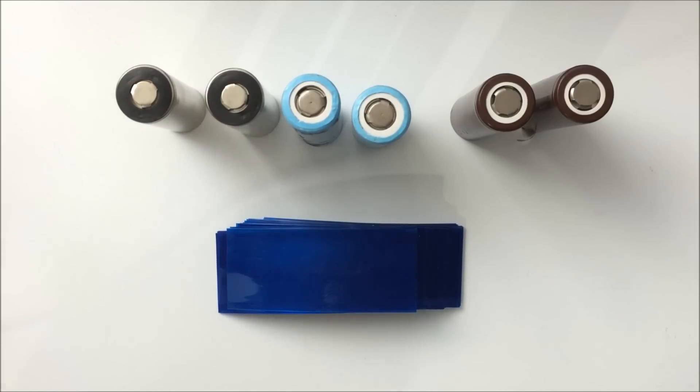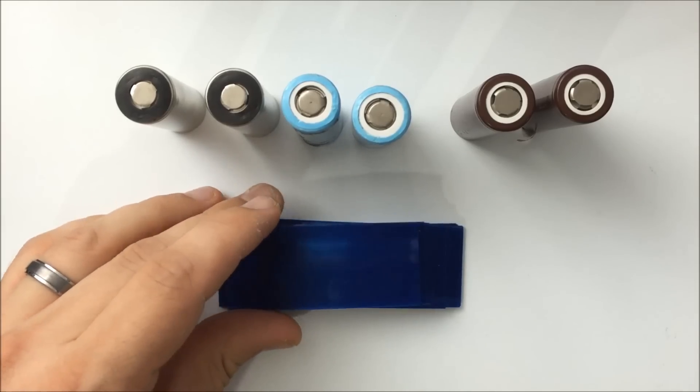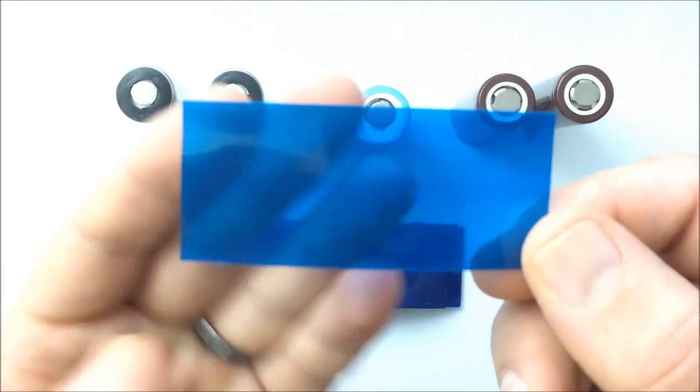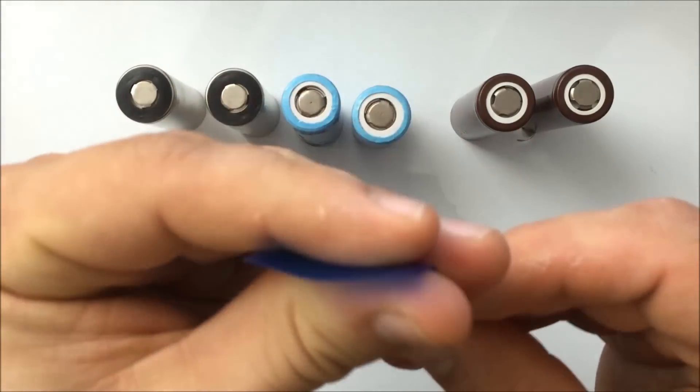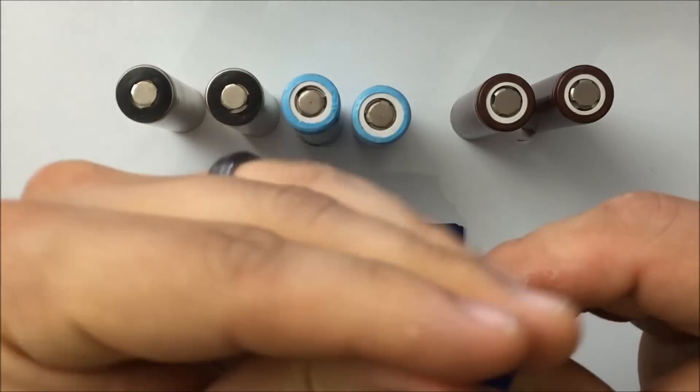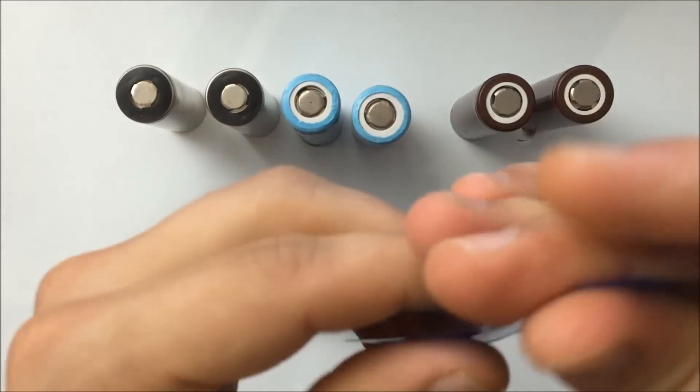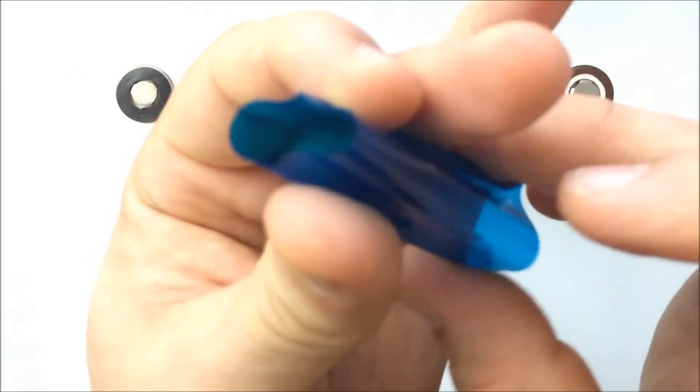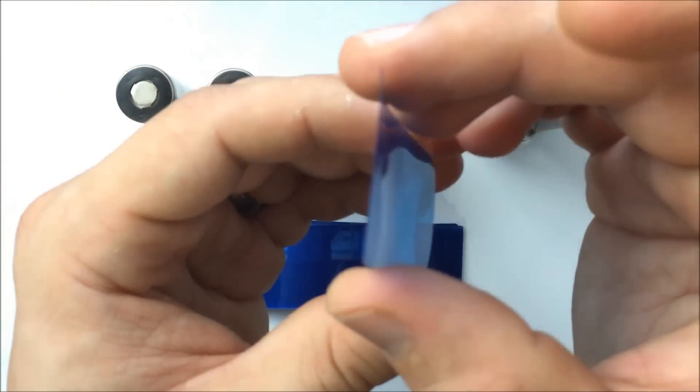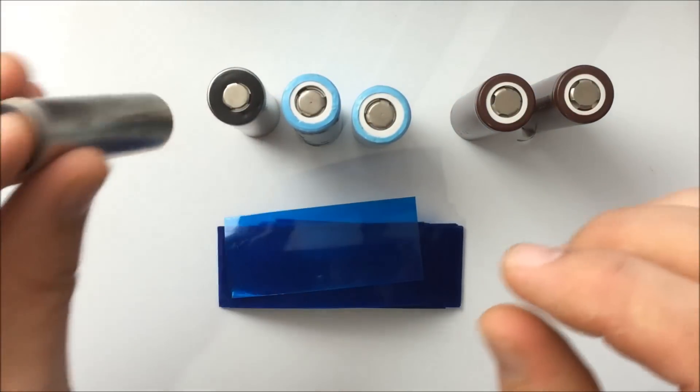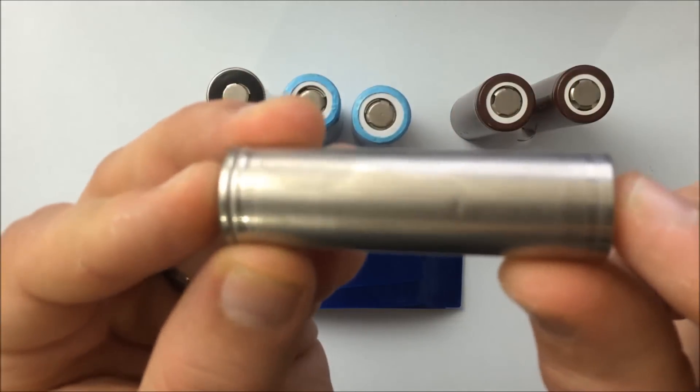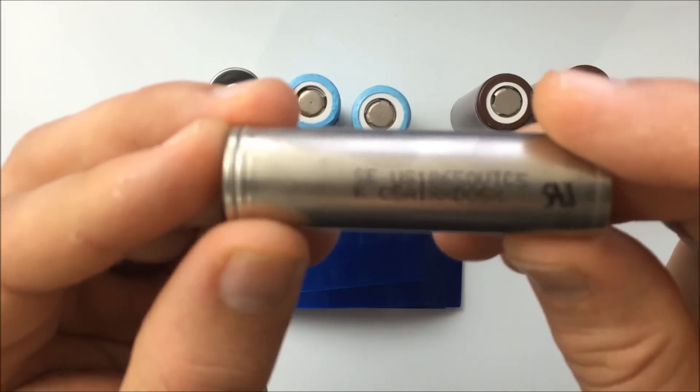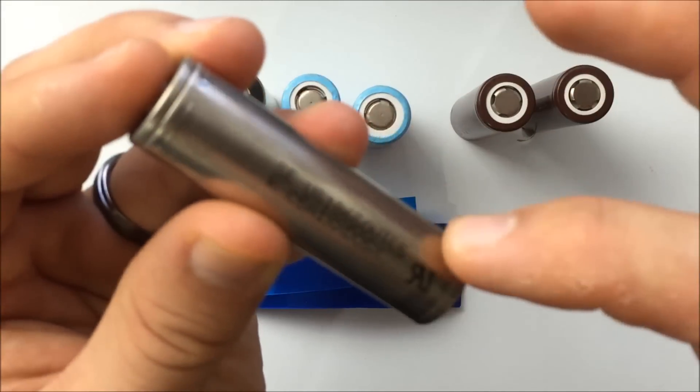So what I did was I ordered a couple packs of 50 of these sleeves. Now, these are pre-cut translucent blue, and they're basically just pre-cut sleeves. You want to make sure that you cover the entire battery from top to bottom, and the reason for this is some mechanical devices, tube mods, you don't want any of this bare metal touching.